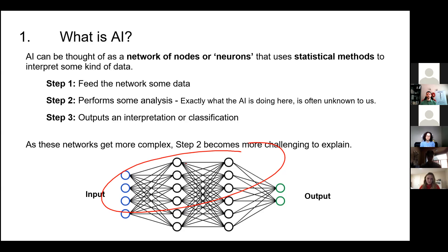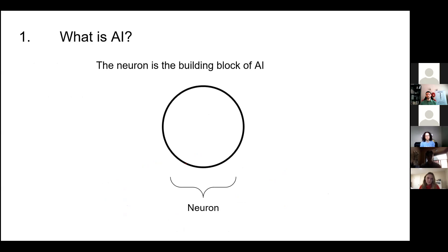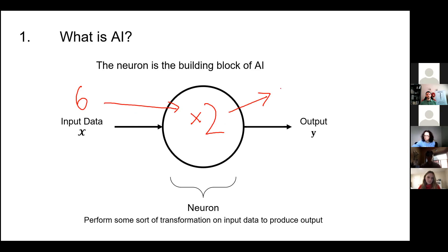At its most basic form, the building block of AI is the neuron — this little circle. This circle has two components: input data and output data. The neuron takes some input information and does some kind of mathematical transformation to produce output data. Let's say your input data is the number six, and the neuron's function is to multiply whatever you input by two. At the end, you get twelve. That's the building block of AI.